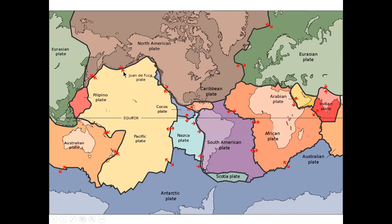Looking at the map, arrows pointing toward each other indicate convergent boundaries — two plates smashing together. Arrows pointing apart, as in the Pacific, indicate a divergent plate boundary where plates move away from each other. And along our California coast in Southern California, arrows pointing in opposite directions indicate a transform boundary, also known as a strike-slip fault.